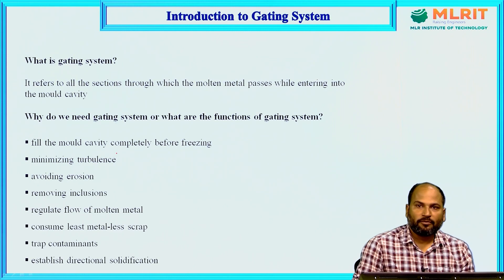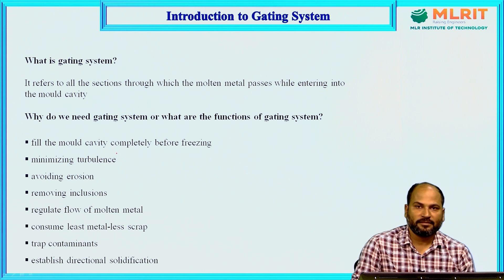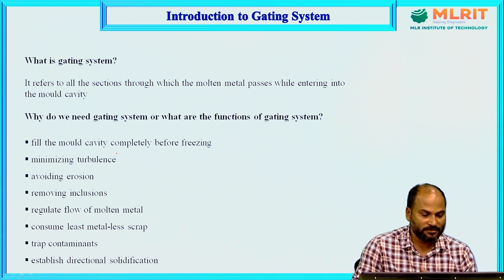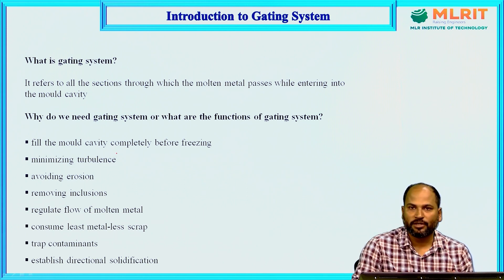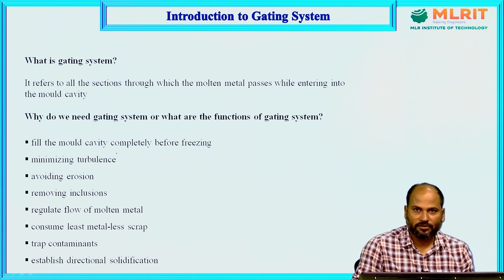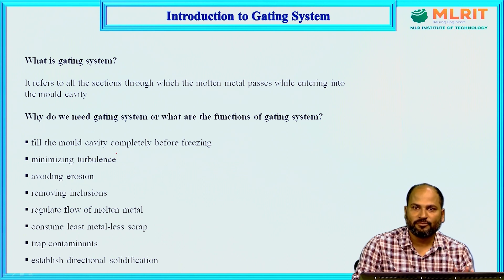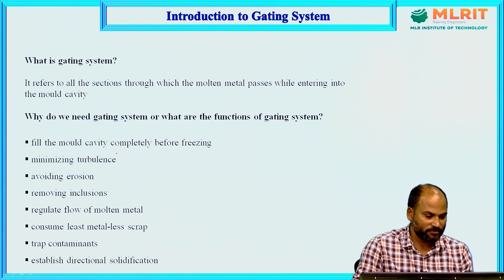First, what is the gating system? The definition: gating system is nothing but the parts of the section through which molten metal passes. That is a simple definition — the parts through which molten metal passes are known as the gating system. There are many parts; we will see in the next slide what those parts are, one by one.